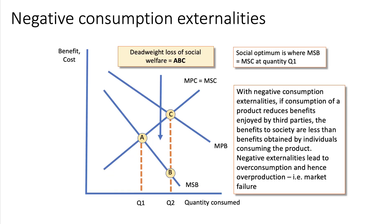This is the standard negative consumption externality diagram, particularly for AQA students. Notice here that with a negative externality, my consumption is reducing — cutting the benefit to a third party. So here's the private benefit to the consumer, MPB, but there's a negative externality meaning that the social benefit lies below. At the private optimum, which is at point C, output Q2, there's a negative consumption externality shown by the vertical distance CB.